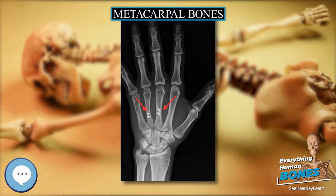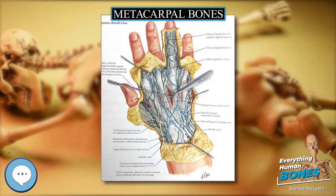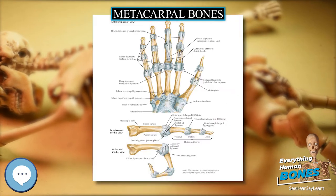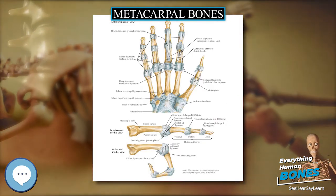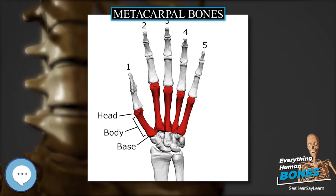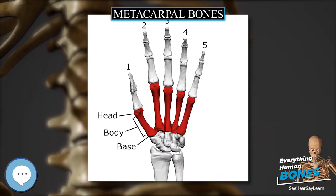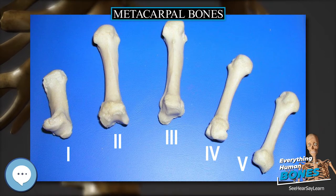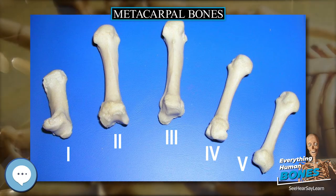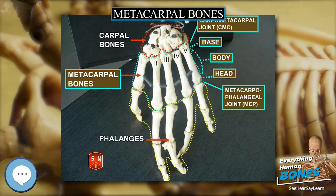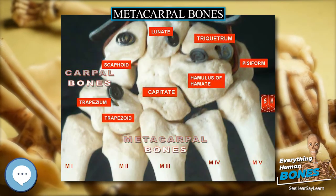Abductor pollicis longus inserts on the trapezium and base of metacarpal 1, abducts the thumb in the frontal plane, and extends the thumb at the carpometacarpal joint. Opponens pollicis inserts on metacarpal 1 and flexes metacarpal 1 to oppose the thumb to the fingertips. Opponens digiti minimi inserts on the medial surface of metacarpal 5, flexes metacarpal 5 via the carpometacarpal joint when the little finger is moved into opposition with the tip of the thumb, deepening the palm of the hand.